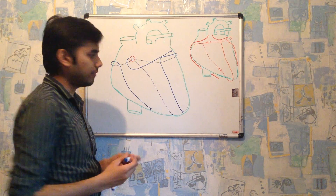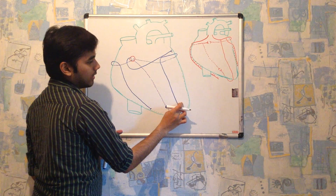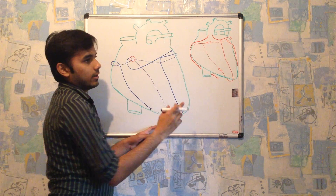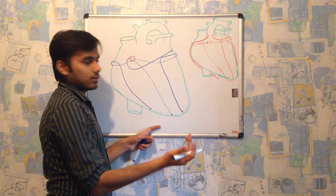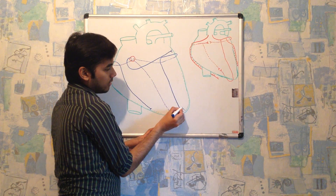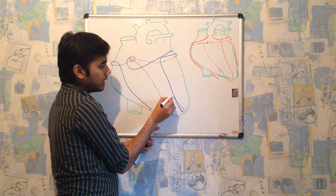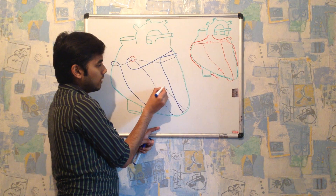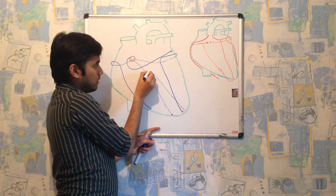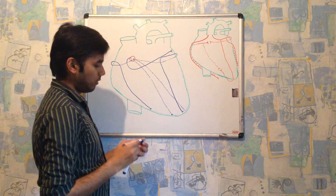The second accessory vein is the posterior vein of the left ventricle. This is the left ventricle region, and from the posterior side of the left ventricle this vein comes upwards and finally drains into the coronary sinus.